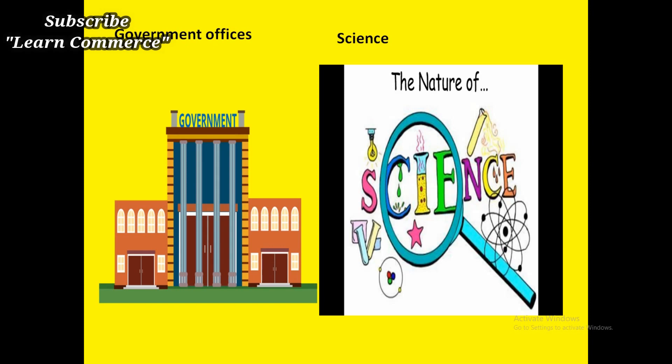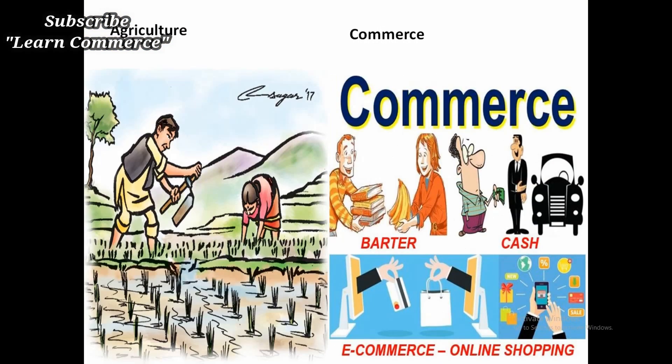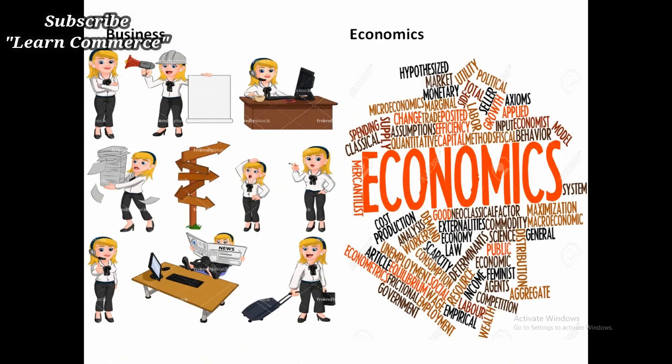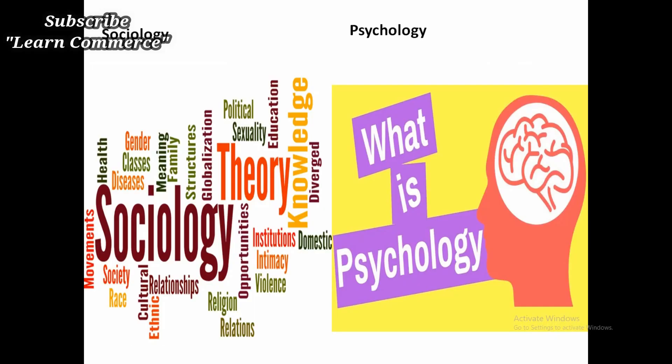Now, statistics is considered to be a distinct branch of study applicable to investigations in many other branches of science. Statistical methods are applied to scientific problems in biology, medicine, agriculture, commerce, business, economics, industry, insurance, sociology, and psychology, etc. Let's look at some important areas of application of statistics.